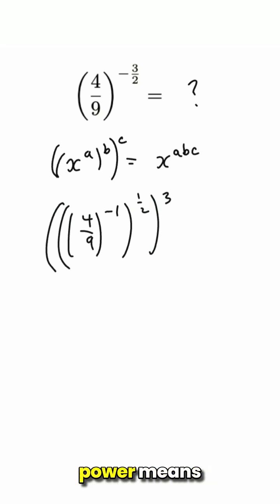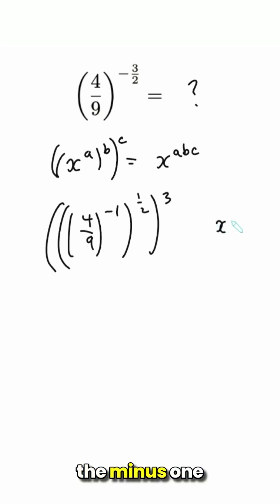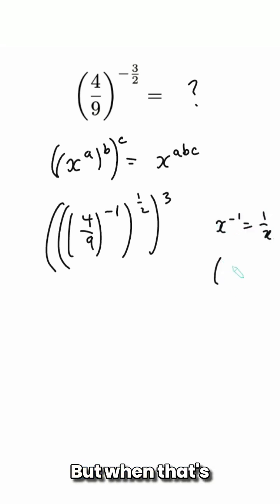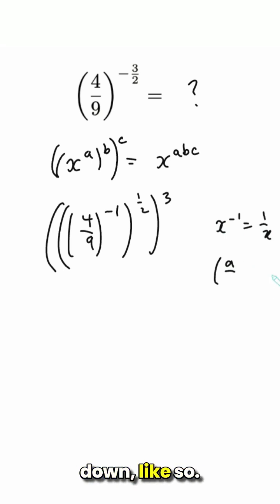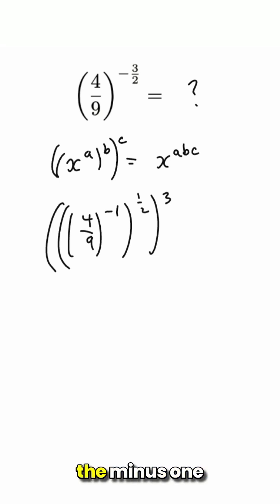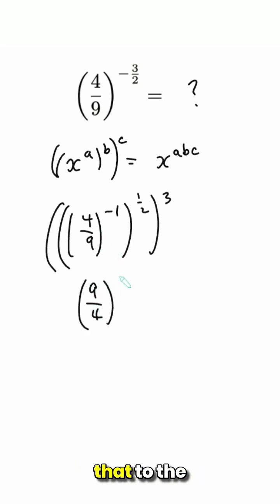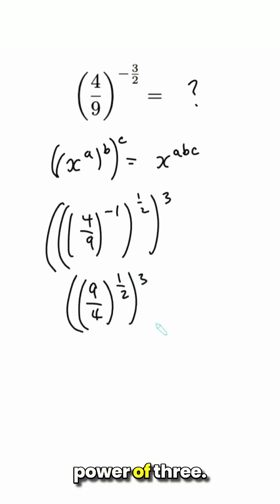Now, minus 1 power means taking the reciprocal. So x to the minus 1 is 1 over x. But when that's a fraction like a over b to the minus 1, that turns the fraction upside down. So 4 ninths to the minus 1 is 9 over 4, and I do that to the power of a half to the power of 3.